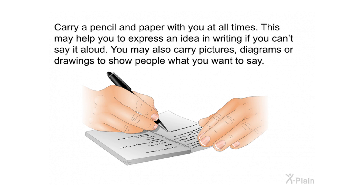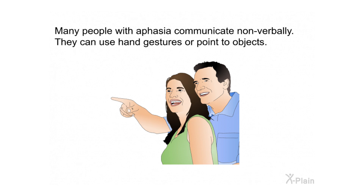Carry a pencil and paper with you at all times. This may help you express an idea in writing if you can't say it aloud. You may also carry pictures, diagrams, or drawings to show people what you want to say. Many people with aphasia communicate non-verbally — they can use hand gestures or point to objects.